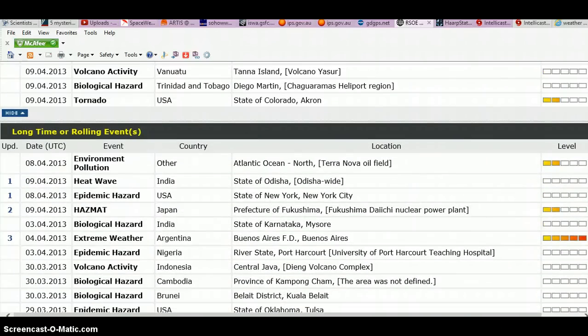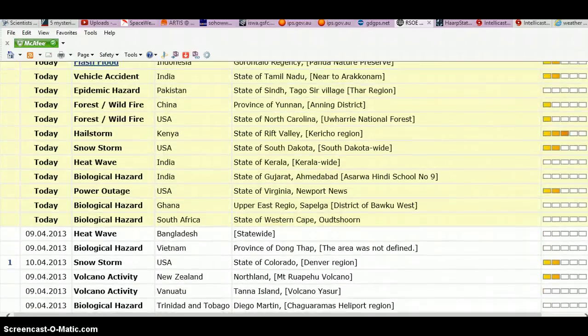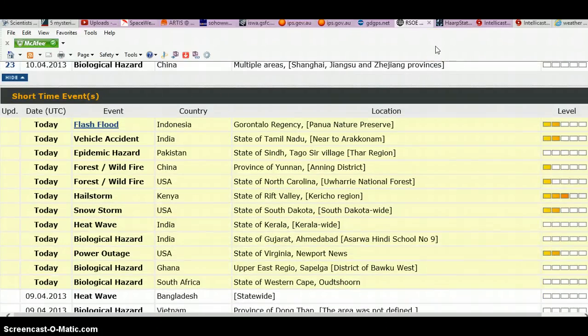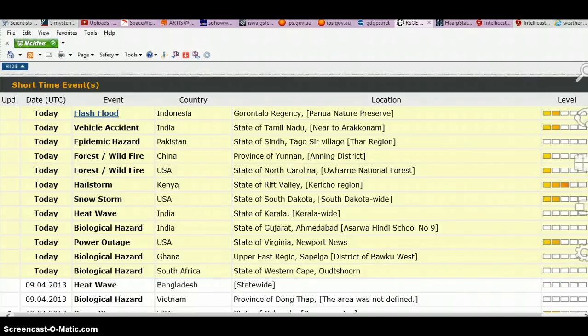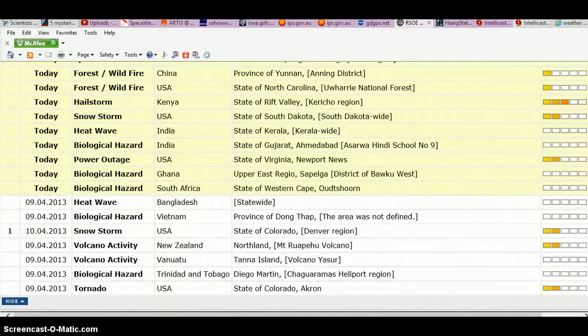I want everyone out there to be prepared. We're seeing a lot of strange stuff. In the past, we got flash floods in Indonesia, epidemic hazard in Pakistan, wild forest fires in China, wild forest fires in the USA, hail storms in Kenya, snow storms in US, tornadoes. We got a heat wave in India. We just had power outages in the US state of Virginia, Newport. Yesterday we had volcano activities like I said, New Zealand, Vanuatu too.